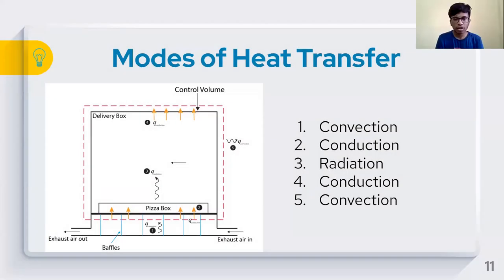Thank you, Aashrita. I'll take it from you. The different modes of heat transfer we have considered in this problem statement are conduction, convection, and radiation. As marked in the figure, the mode of heat transfer at point 1 is convection, at point 2 is conduction, at point 3 is radiation, at point 4 is conduction, and at point 5 is convection.